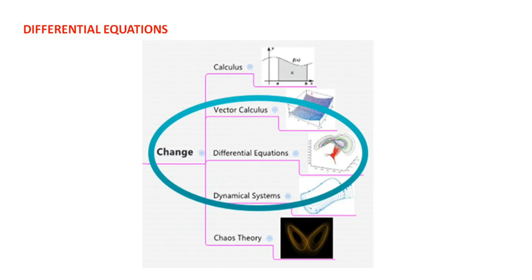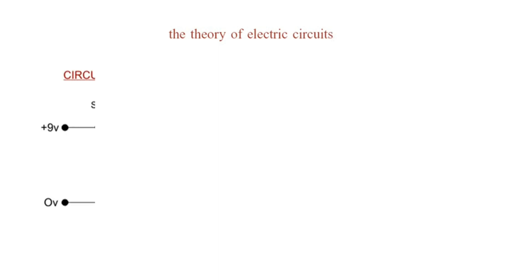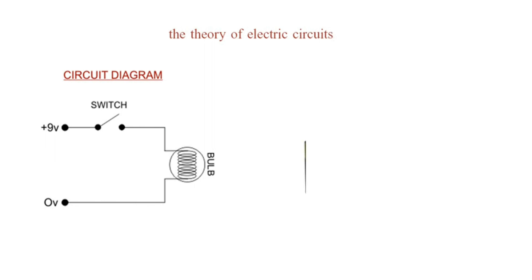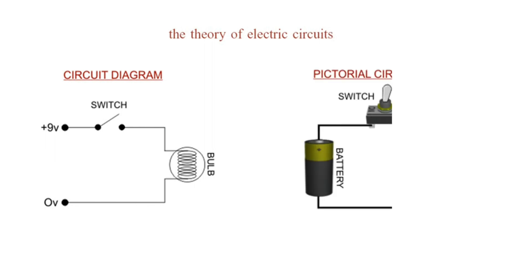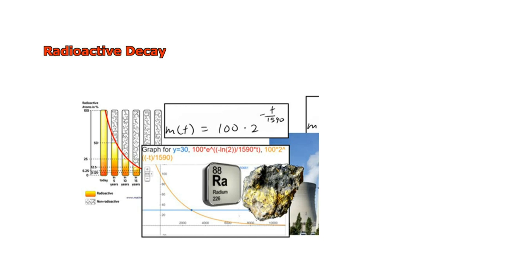Except for change, nothing in the physical world is permanent. Differential equations are of fundamental importance because they express relationships involving rate of change. These relationships form the basis for studying phenomena in a variety of fields in science and engineering. In fact, many physical laws are expressed mathematically in the form of differential equations. The primary use of differential equations is to serve as a tool for the study of change in the physical world.